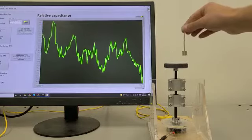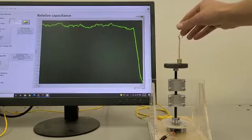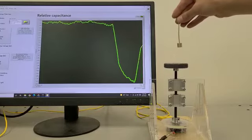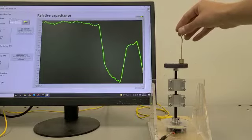We can put 10 grams on this actuator and you see a large change in the capacitance signal that corresponds to a pressure of about 50 pascals.